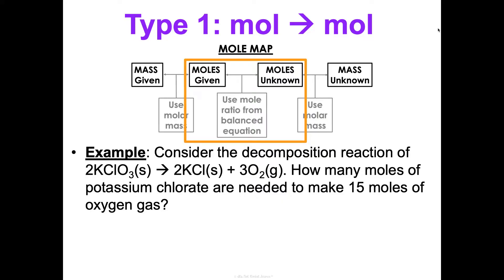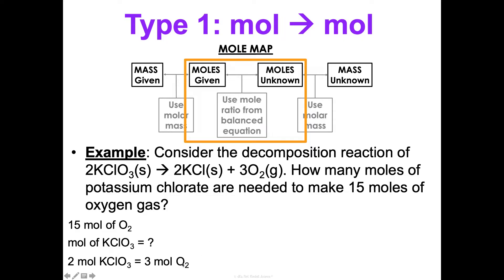Consider the decomposition reaction of solid potassium chlorate decomposing into potassium chloride and oxygen gas. How many moles of potassium chlorate are needed to make 15 moles of oxygen gas? Remember, don't get overwhelmed — let's do RADAR. Read, then analyze: what do we know? We know 15 moles of oxygen gas. What do we want to know? We want to know moles of potassium chlorate, so moles of KClO₃. Diagnose: what do we need to go from moles to moles? We need a mole ratio from the balanced equation. So the ratio of oxygen to potassium chlorate is three oxygens for every two potassium chlorates — look at those coefficients. So two moles of potassium chlorate equals three moles of oxygen.